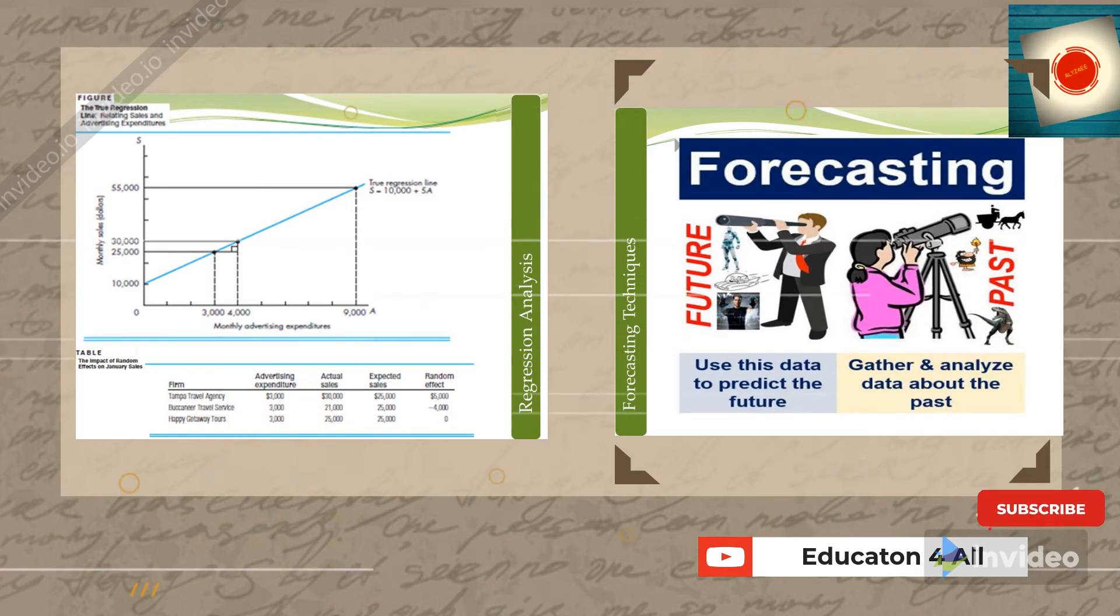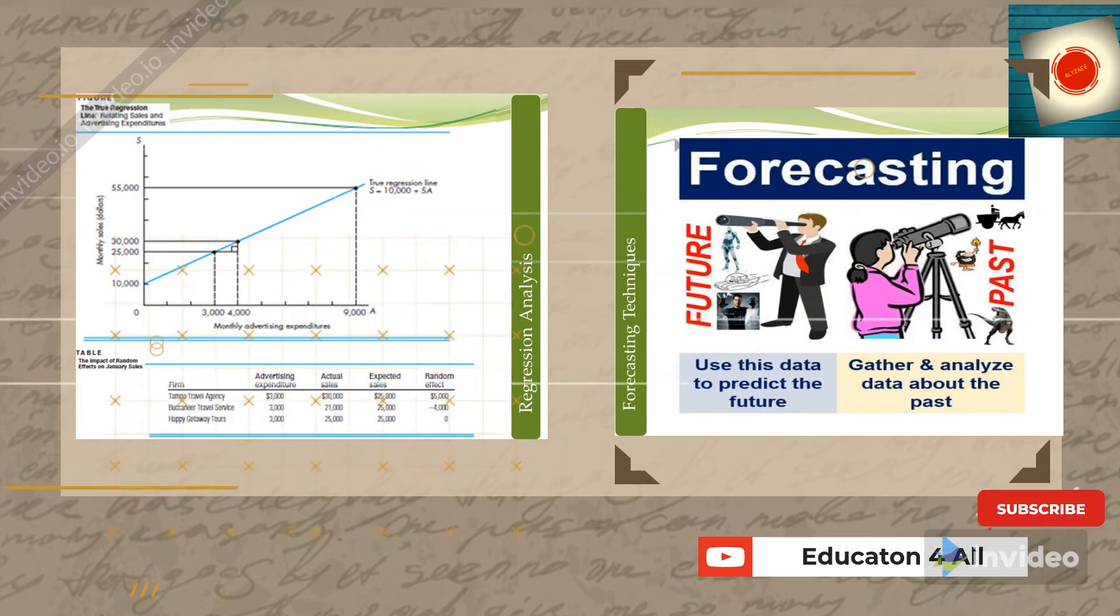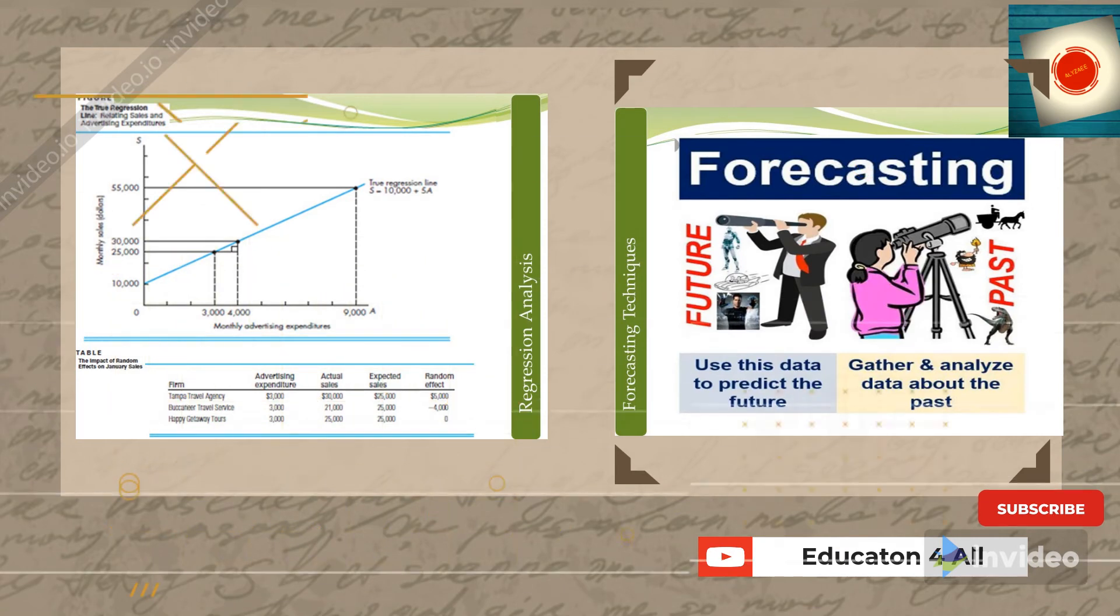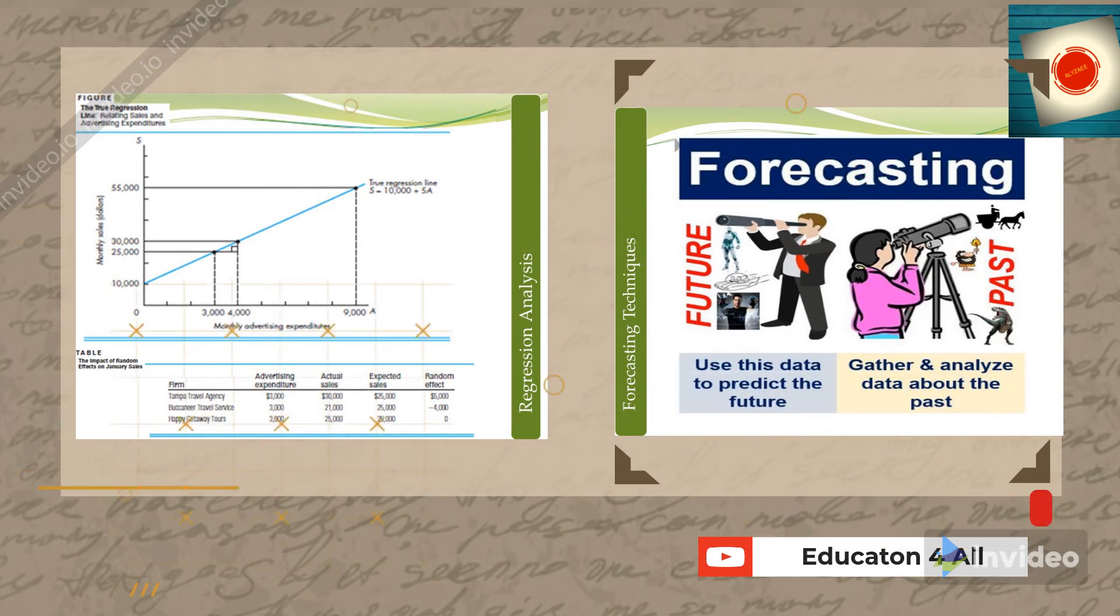The main point shown in the graphical representation: when advertisement cost increases from $3,000 to $4,000, then $5,000 up to $9,000, sales will increase from $25,000 to $30,000 and beyond. A practical example: Pepsi and Coke spend heavily on advertisement.